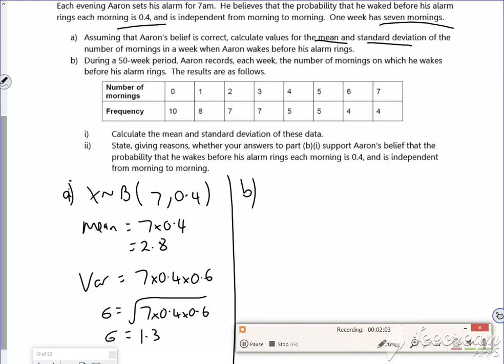If you put that in your calculator in list 1, that in list 2, and then do your calculation, you should get x-bar equals 2.8 and sigma equals 2.24 from your calculator.